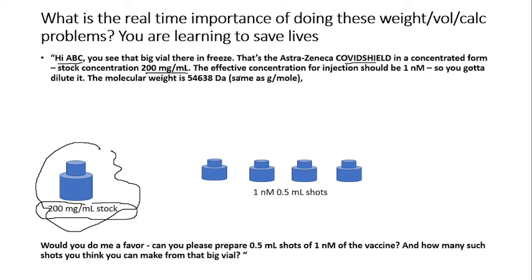You don't know what this is. You just entered the industry. The effective concentration for injection should be 1 nanomolar. You need to dilute it. The molecular weight is 54,638 Dalton, which is the same as gram per mole. You have a large concentration and need to dilute it to smaller concentration. Would you do me a favor? Can you please prepare 0.5 mL shots of 1 nanomolar of this vaccine? He also asks how many such shots you can prepare from the big vial.